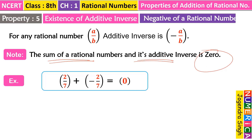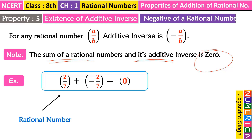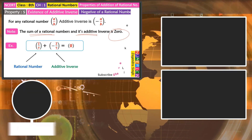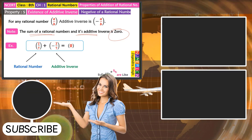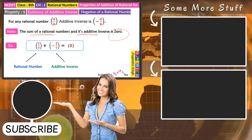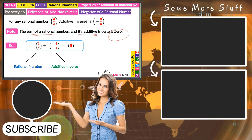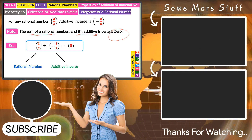Many questions will use the word 'additive inverse.' Wherever the additive inverse word is used, just take the negative of the number given to you. The first number is our rational number and the second one is its additive inverse. Watch the full video without skipping, otherwise you won't be able to understand things properly. That's all for today. Thanks for watching.